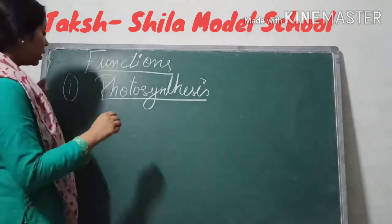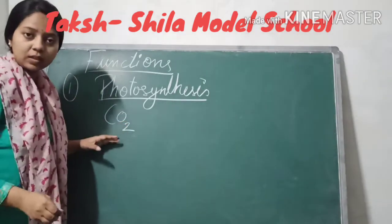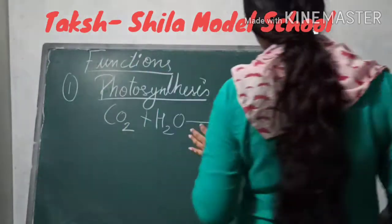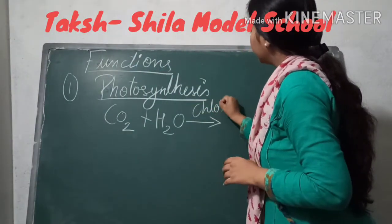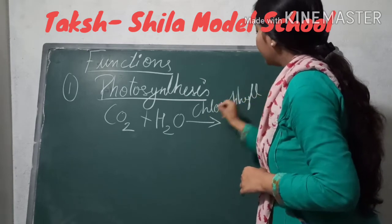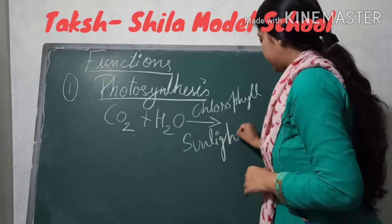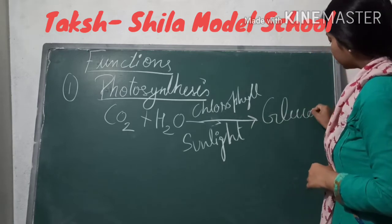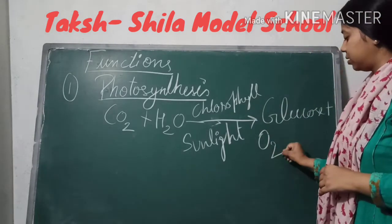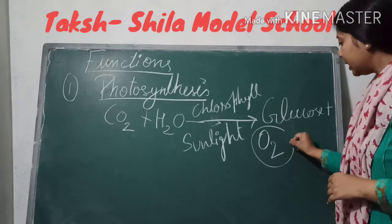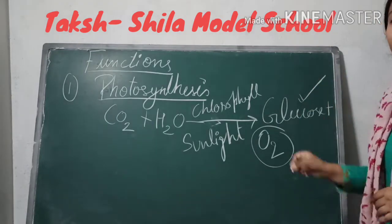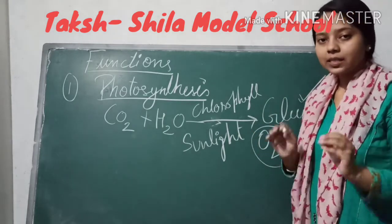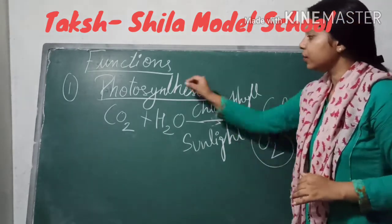What is the process of photosynthesis? Carbon dioxide and water, in the presence of sunlight and chlorophyll, produce glucose and oxygen. Oxygen is released and glucose — that is food — is formed. So the process of photosynthesis, the process of making food, is done inside the leaves.